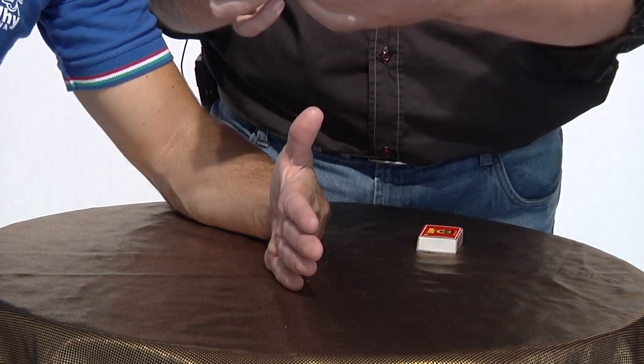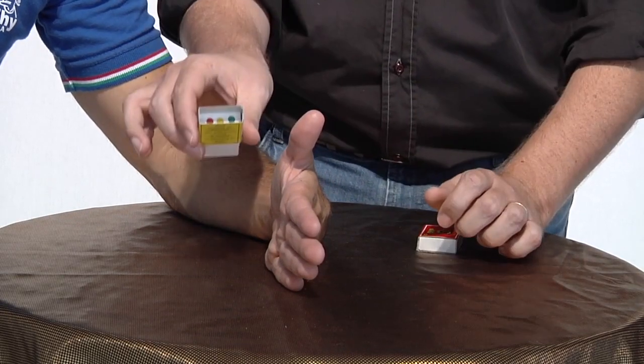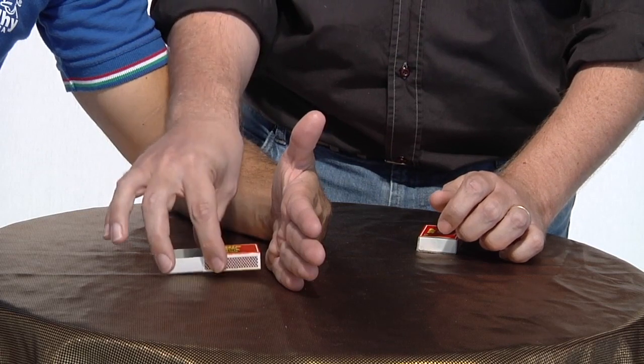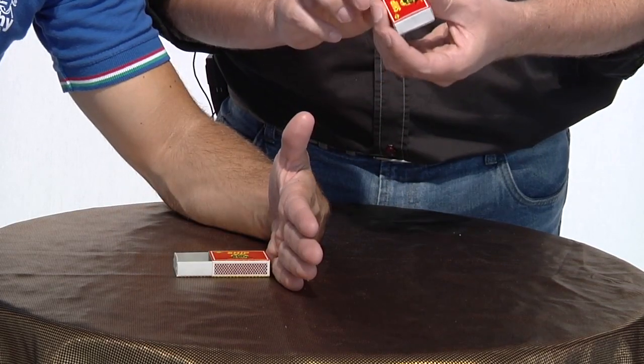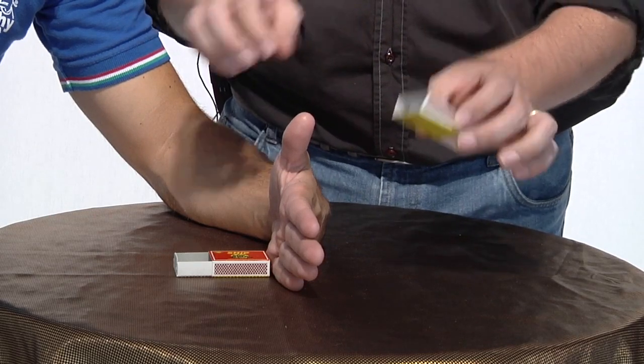Now we'll take the first matchbox, the matchbox with the dots. Here they are. And I'll put it here on this side. And the second matchbox without the dots, I'll open up and put it here.